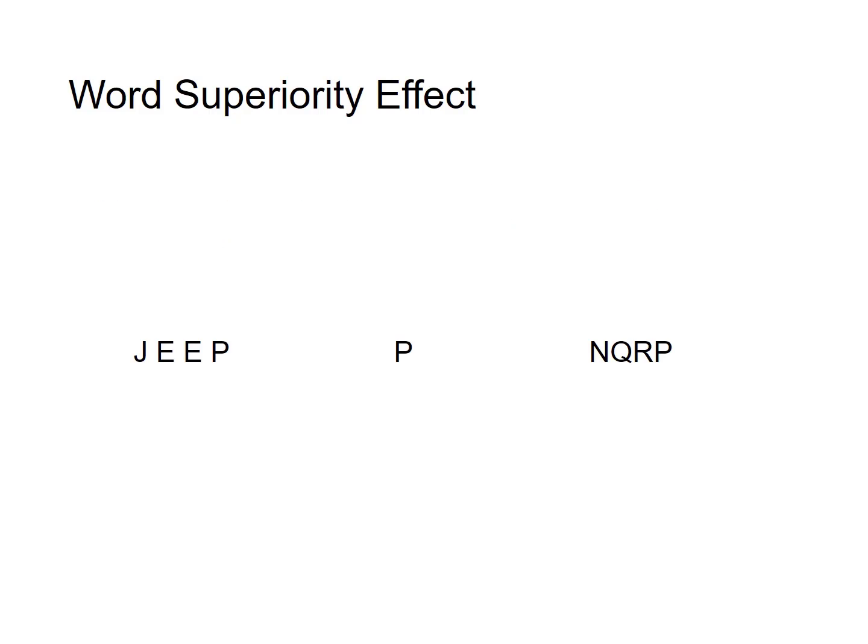Studies showed convincingly that individuals were faster to recognize a letter such as P in 'jeep' when it's part of a real word than when that same letter P is presented by itself, or when it's presented in a sequence of letters that don't make a word. As you see on the right side of the screen, researchers call this kind of sequence of letters a non-word.